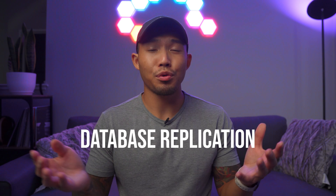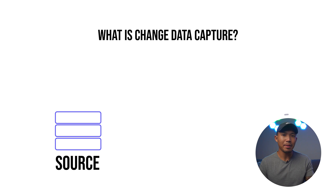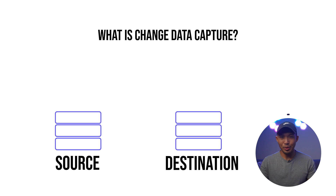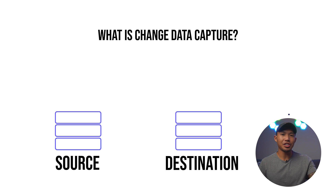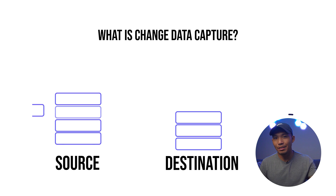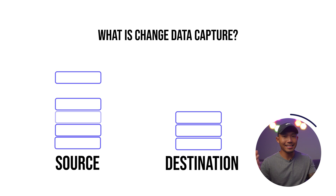One of the use cases CDC could be implemented is through database replication. Let's say there's a source in the form of a Postgres database, and a destination in the form of another Postgres database. The source database has some changes — let's say we insert a couple new rows and delete one. That would effectively render our destination database out of sync and out of date.